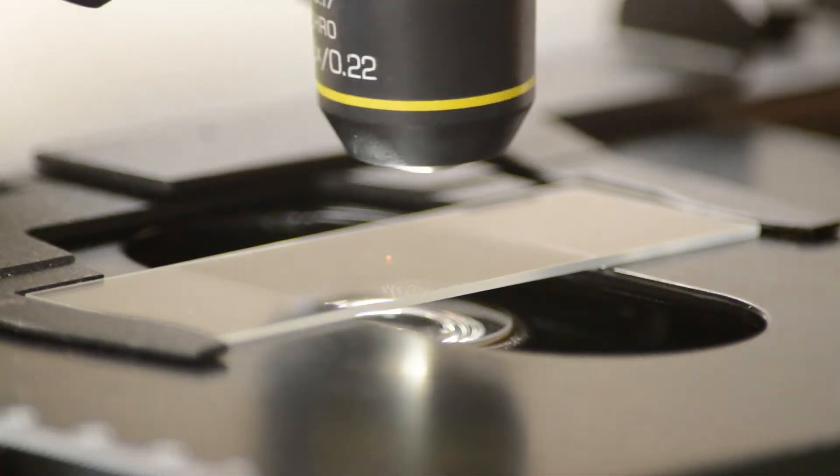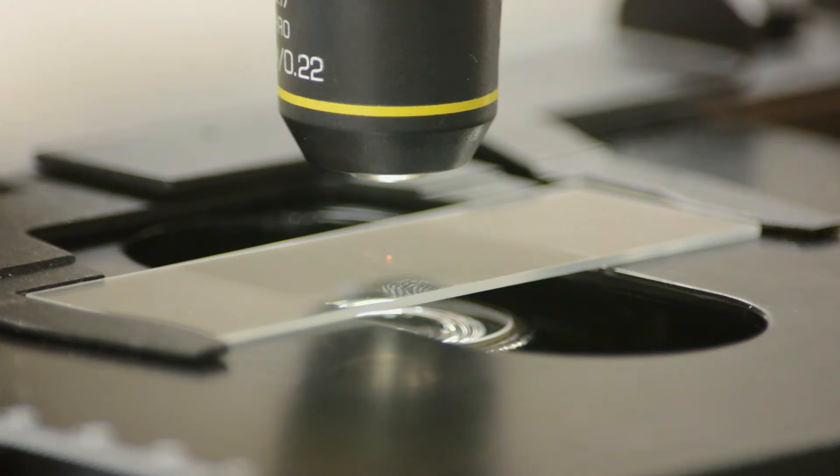We then grab the turret. We rotate the turret to bring in the next higher power objective which in this case is the 10x objective. We click it into place.